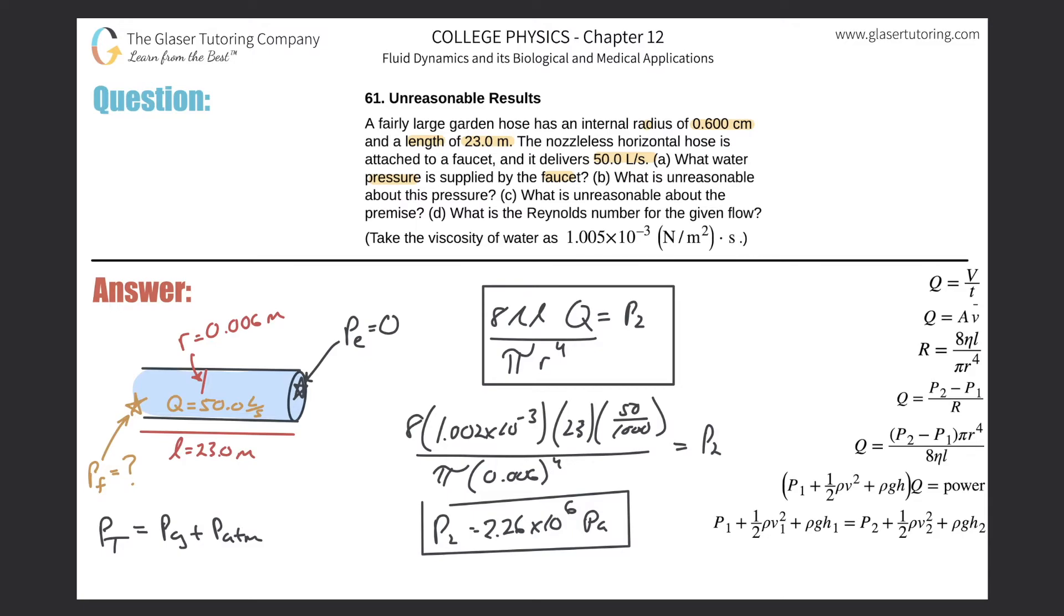What's unreasonable about this pressure? I mean, this is way too high. If you had to convert this into atmospheres, let's say you take this value and divide it by 1.013 times 10 to the fifth. So let's do that. We get a pressure in atmospheres of 22.4 or so, 22.4 atmospheres.